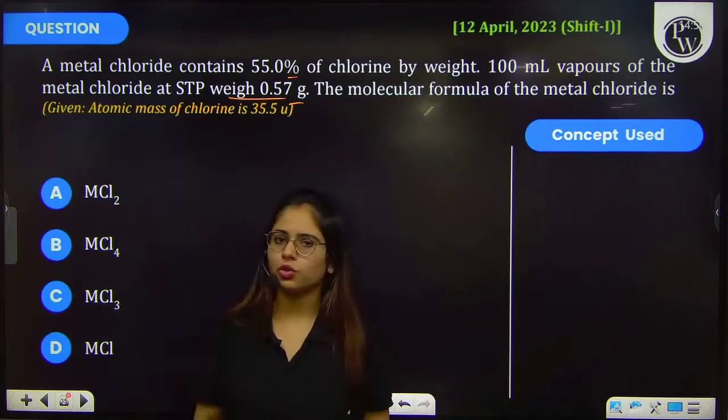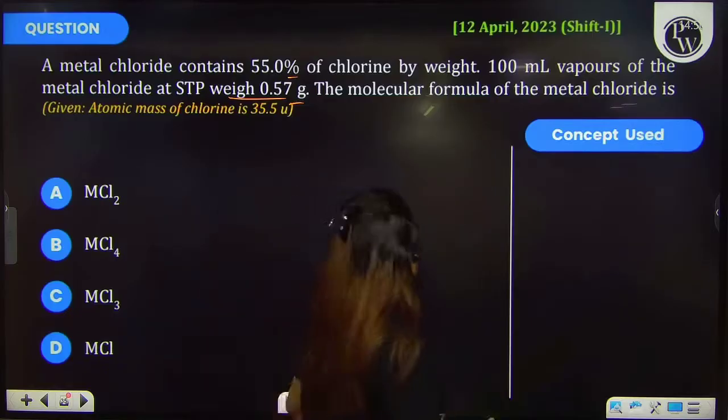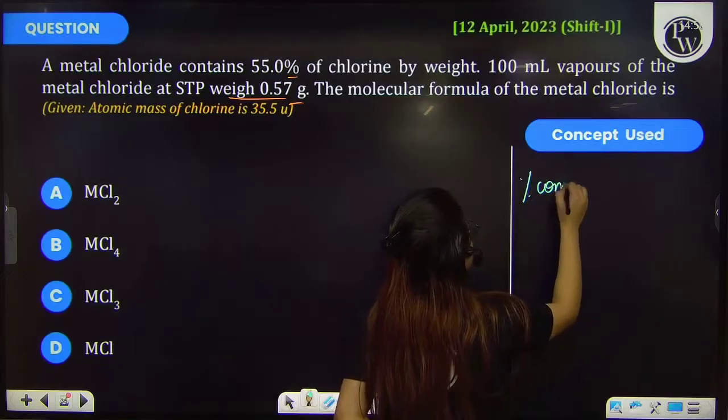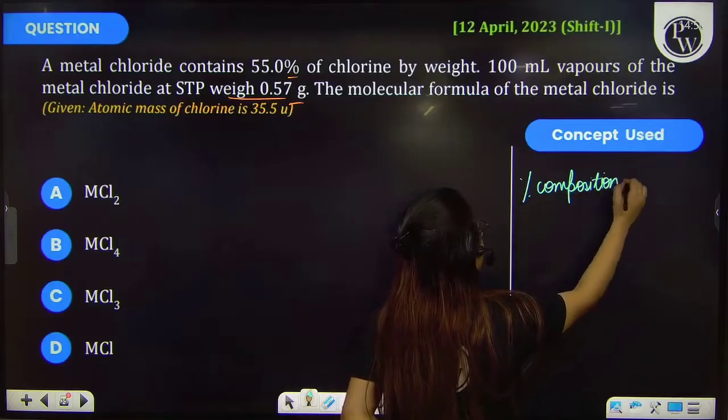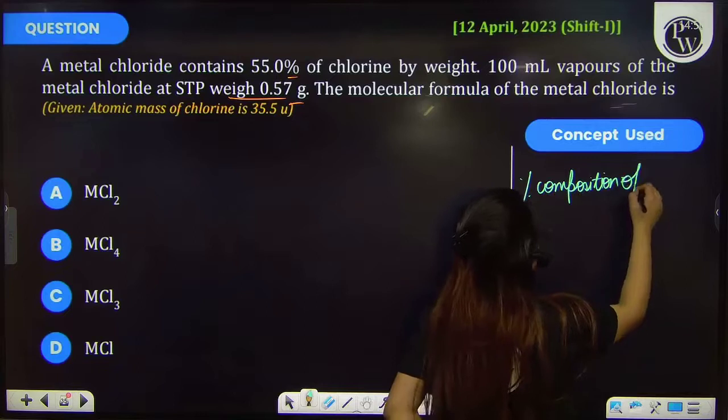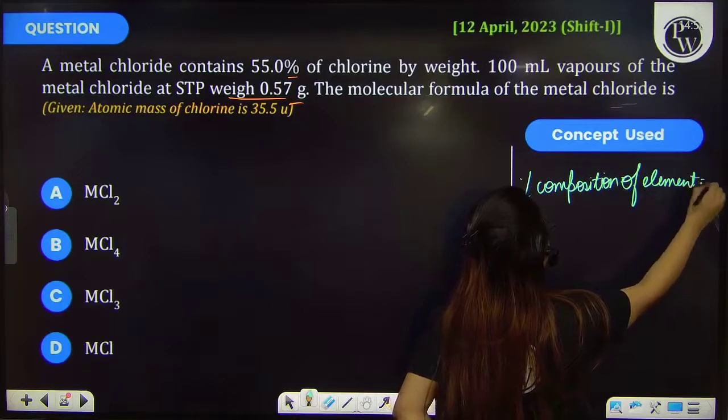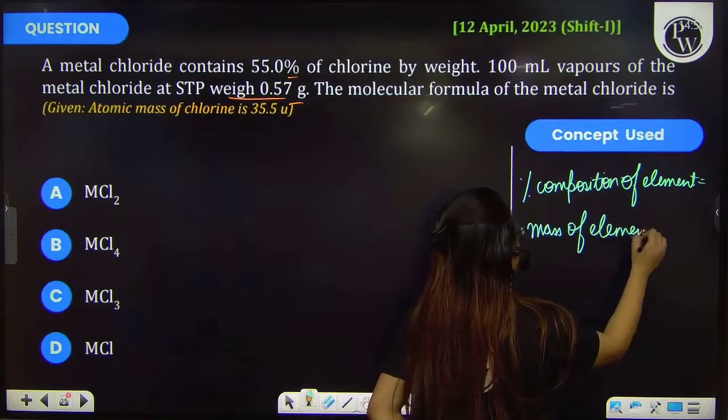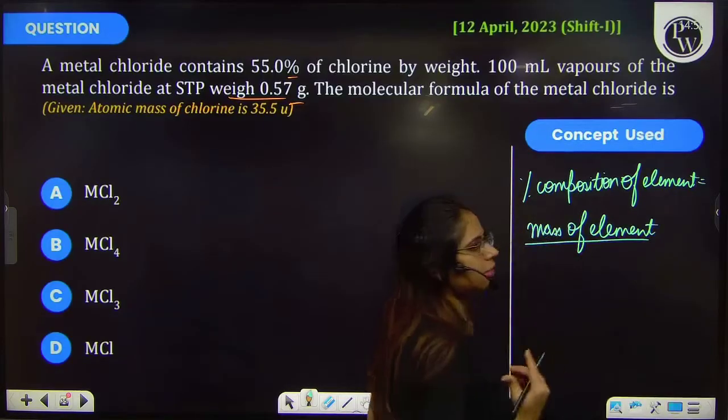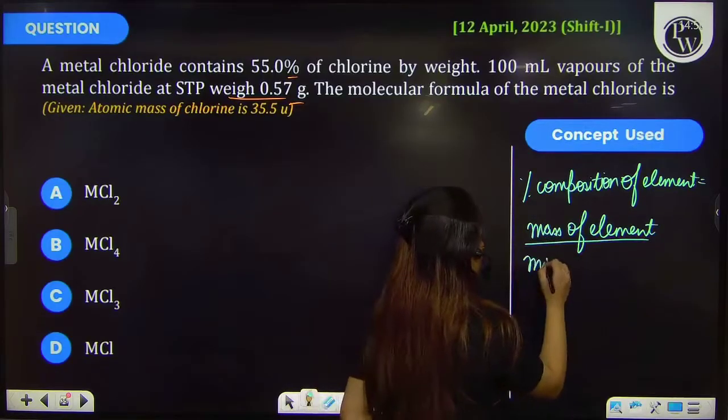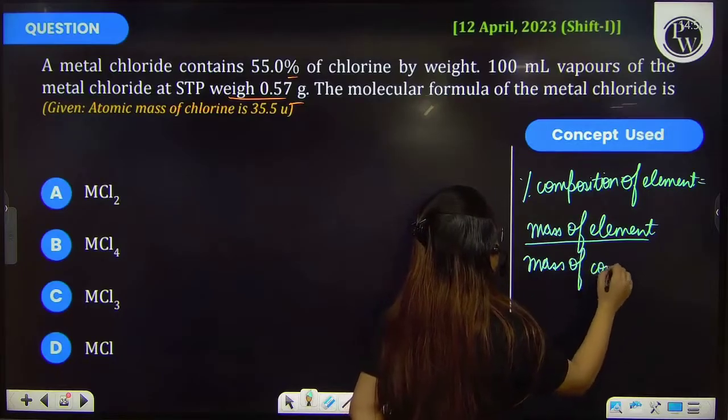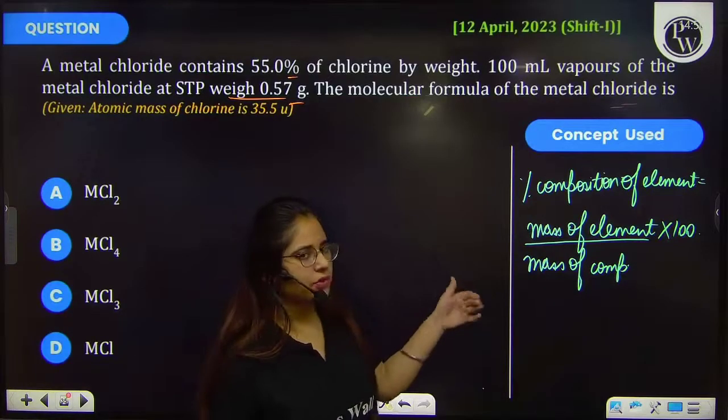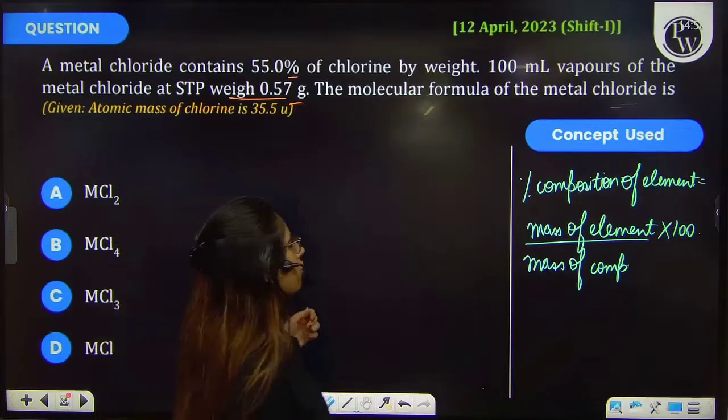For this you should know how to calculate the percentage composition. The key concept that we will be using here is percentage composition which is equal to mass of element present in that compound divided by the total mass of the compound times 100. By using this concept we will calculate the molecular formula of this metal chloride.